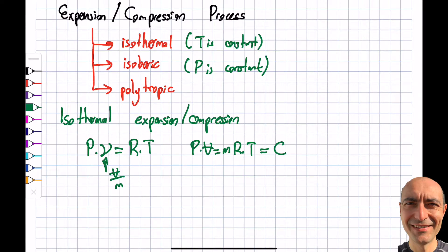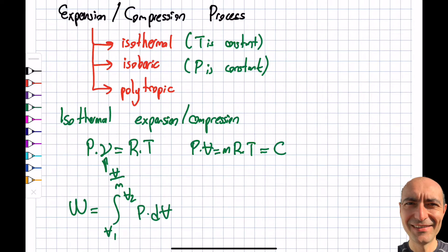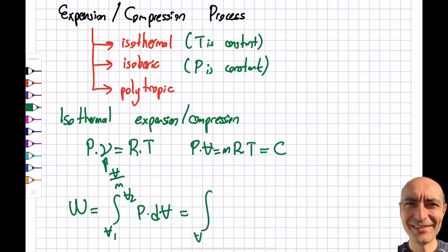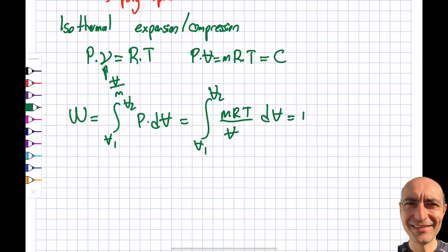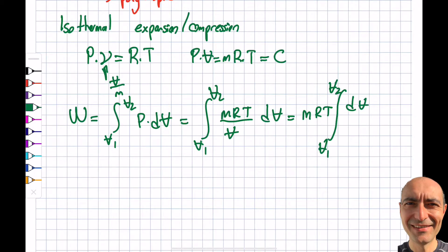Looking at my boundary work equation — integral from Volume 1 to Volume 2 of P dV — my variable is volume, so let me express P in terms of volume. So the integral becomes: from V1 to V2, P equals MRT divided by volume, so I have MRT times the integral from V1 to V2 of dV over V. Since MRT is constant, I can take it out of the integral.